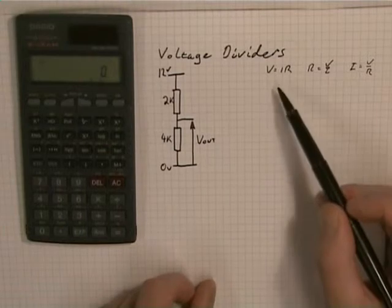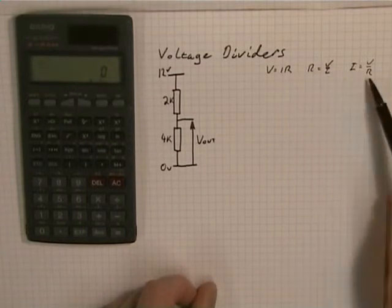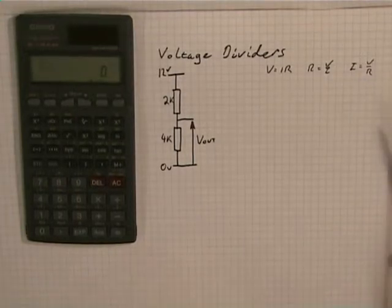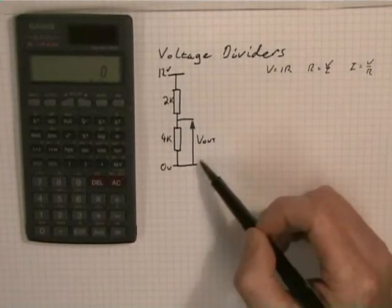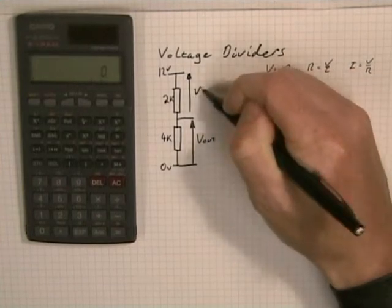Now what we know are Ohm's laws. V equals IR, R equals V upon I, and I equals V over R. We also have Kirchhoff's voltage law, which says that 12 volts will equal V out plus that voltage there, I'll call V2.